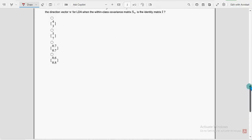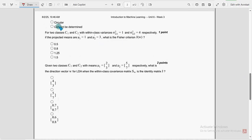Eighth question. For two classes C1 and C2 with within class variances, if the projected means are mu1 equal to 1 and mu2 equal to 3, what is the Fisher criterion G of W? For eighth question, second option, 0.8 is the probable solution.